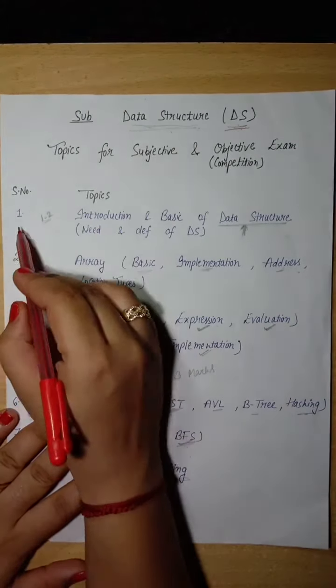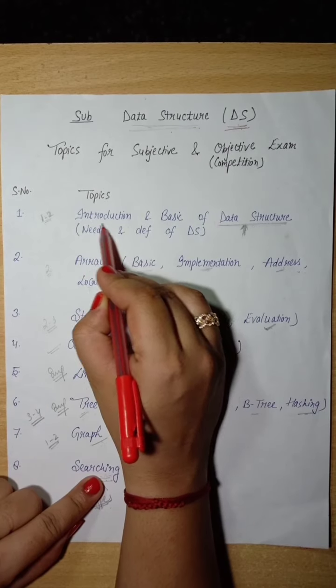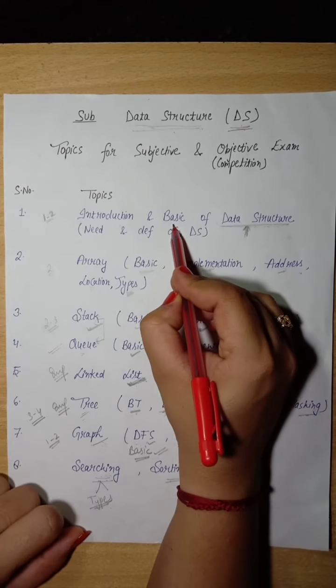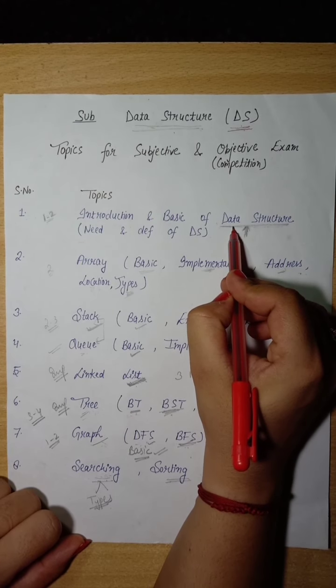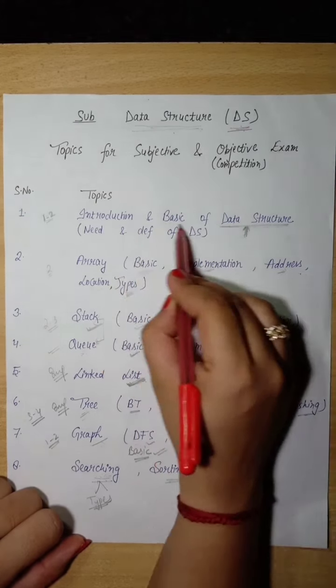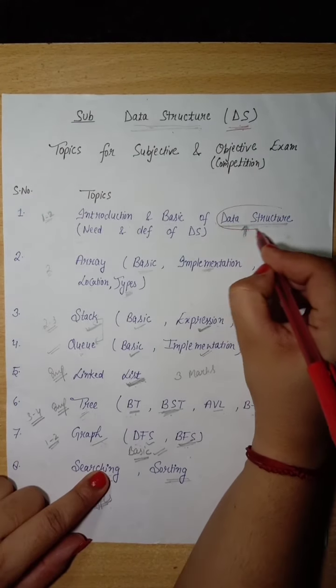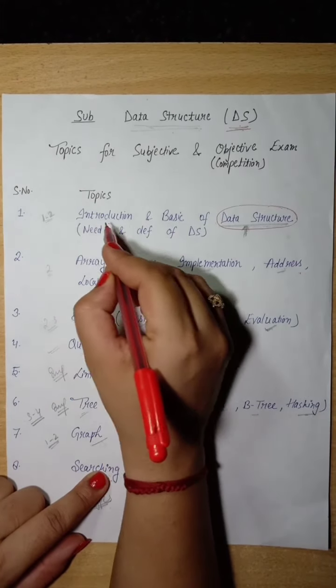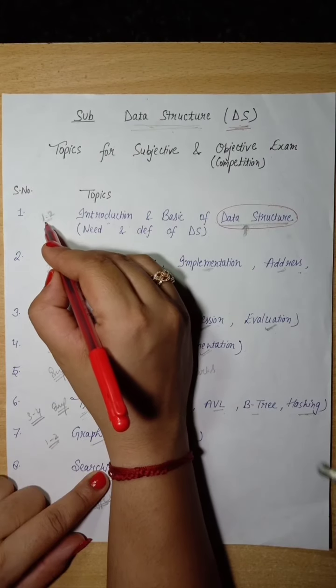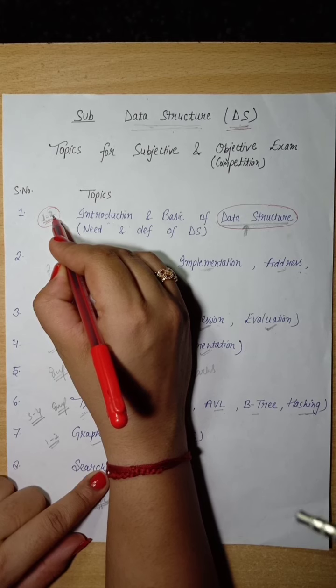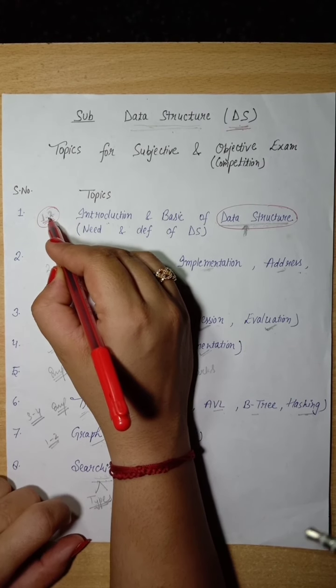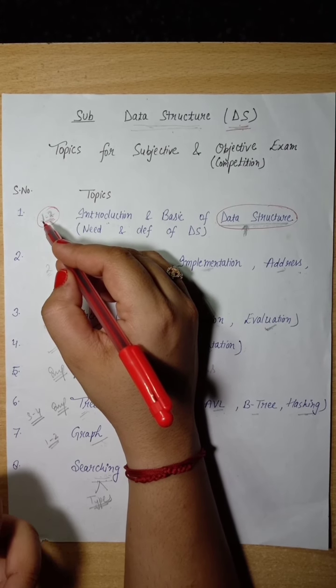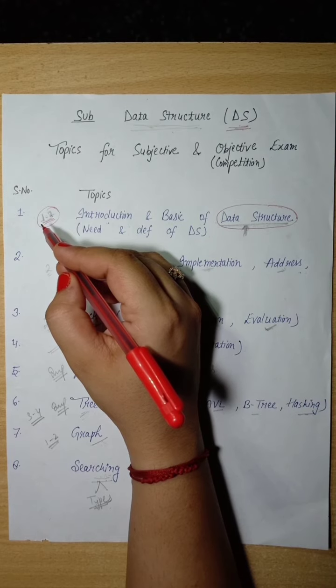First of all, the topic that comes to DS is Introduction and Basic of Data Structure. We will study about the basics of data structure, what is the need in computer science, what is the use of it, what is the definition. Overall, we will see the basics of where it is used in our computer. From subjective point of view, all these topics are important, but from objective point of view, one question comes to our competition exam, like in NET or KV exam or bank IT officer exams.